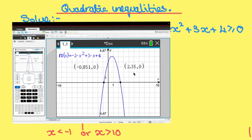So we now need to solve the inequality -2x² + 3x + 4 is greater than 0. Well, it's greater than 0 between the two zero points, because as you can see, the graph is above the x-axis. So the solutions for our inequality are x is between -0.851 and 2.35.